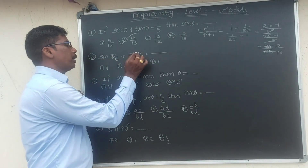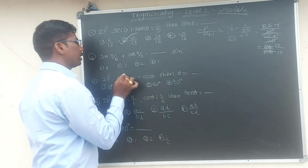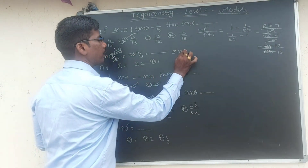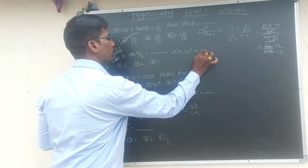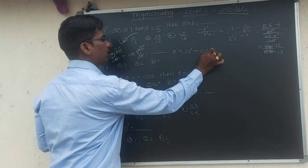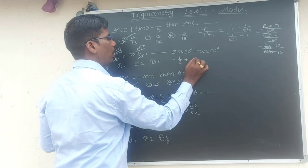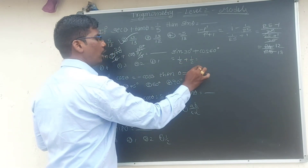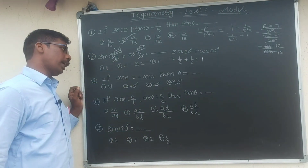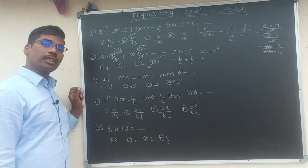Next: sin(π/6) plus cos(π/3) is equal to how much? π by 6 means 180 divided by 6, which is 30 degrees. π by 3 means 180 divided by 3, which is 60 degrees. So sin 30 degrees is 1 by 2, and cos 60 degrees is also 1 by 2. Half plus half equals full, that is 1. The answer is 1, fourth option.